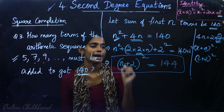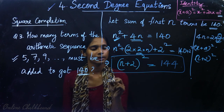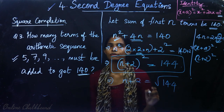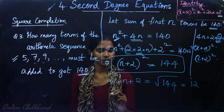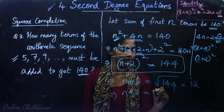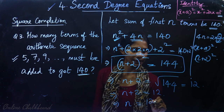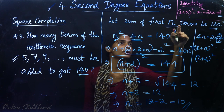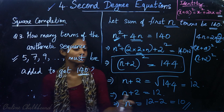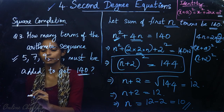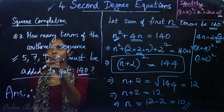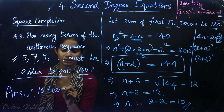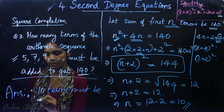So (n + 2)² equals 144. Taking the square root: n plus 2 equals 12, which gives n equals 12 minus 2, equal to 10. Therefore, the sum of the first 10 terms is 140, so 10 terms must be added to get 140.